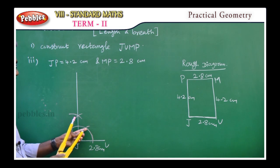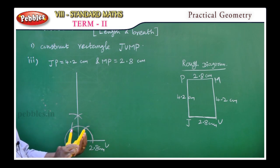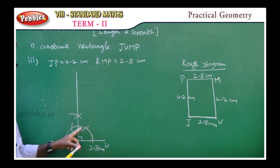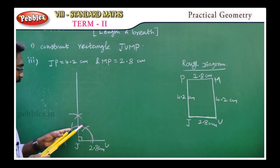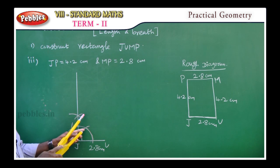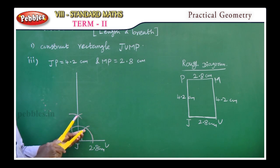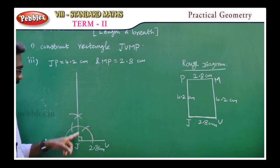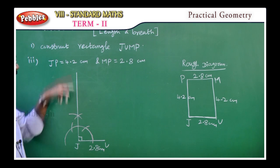There are two arcs intersecting, and above the semicircle we get a second point. The two arcs meet at that point, and we join that point to J — so the line JX is a perpendicular line to the base JU.